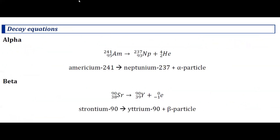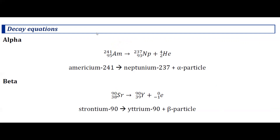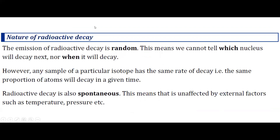In alpha decay, atomic mass decreases by 4 and atomic number decreases by 2. In beta-minus decay, atomic mass stays the same and atomic number increases by 1. In beta-plus decay, atomic mass remains the same and atomic number decreases by 1. Gamma decay has no separate nuclear equation as it is simply the continuous emission of energy. Nuclear decay is random and spontaneous.